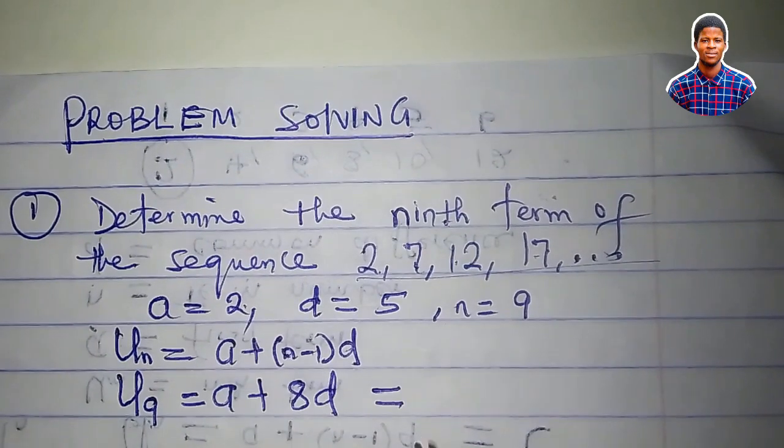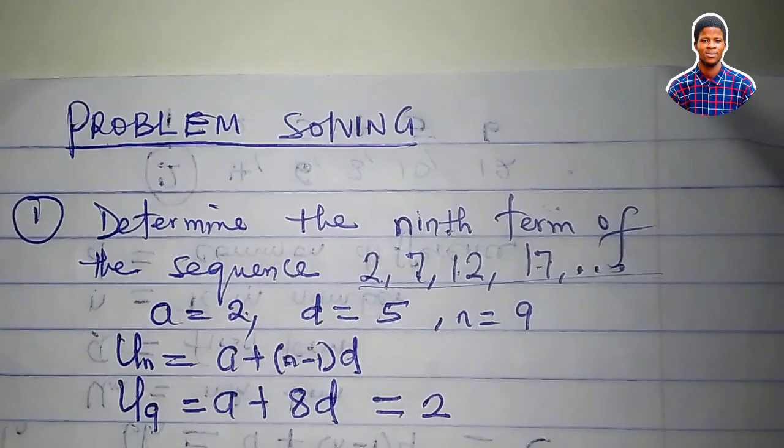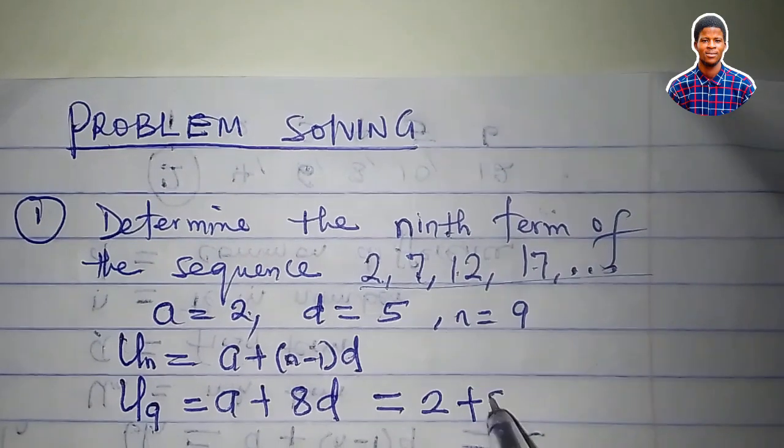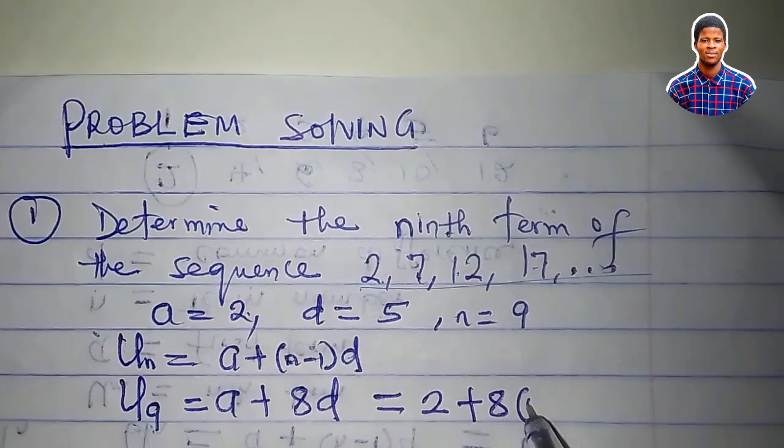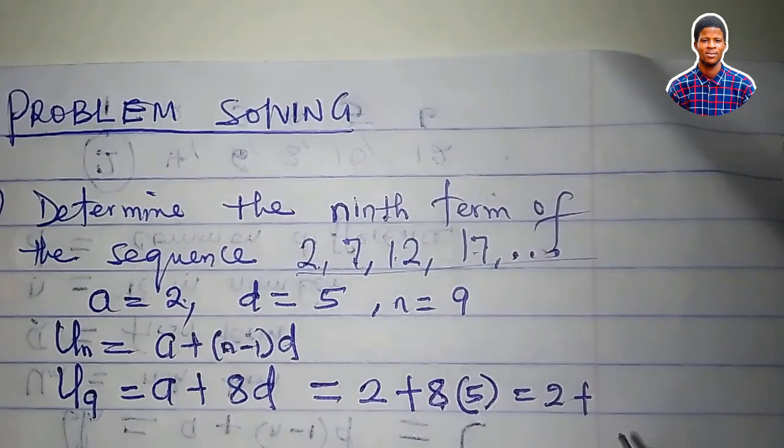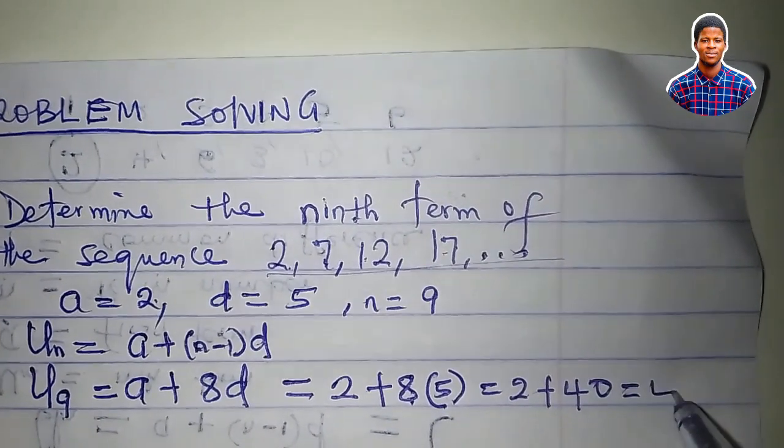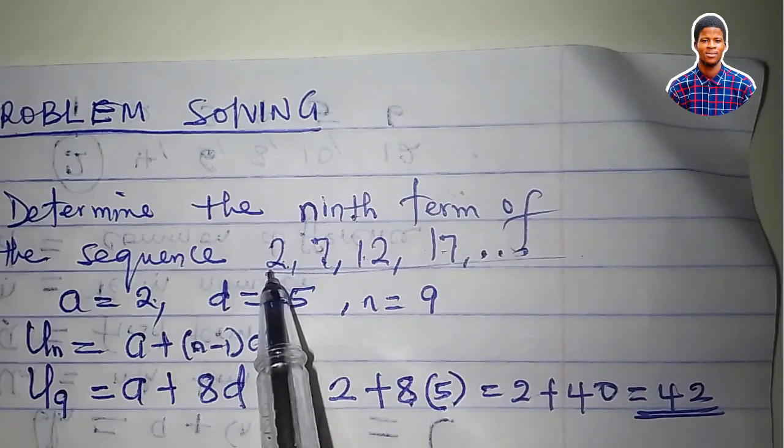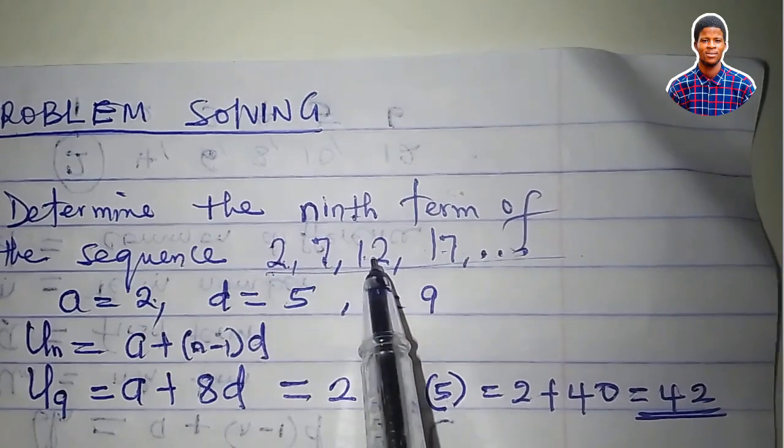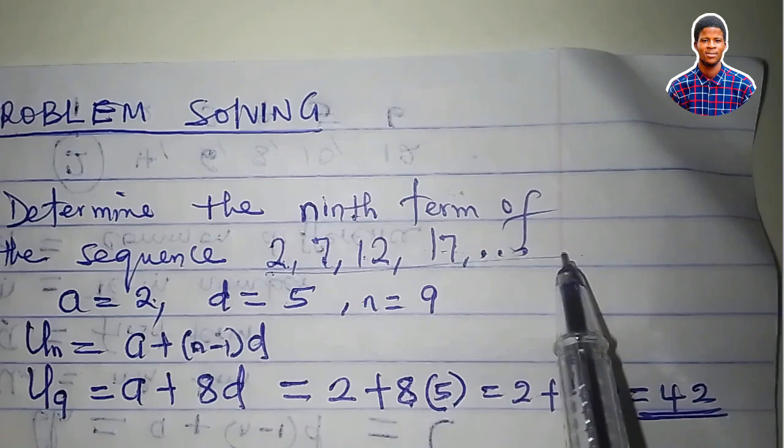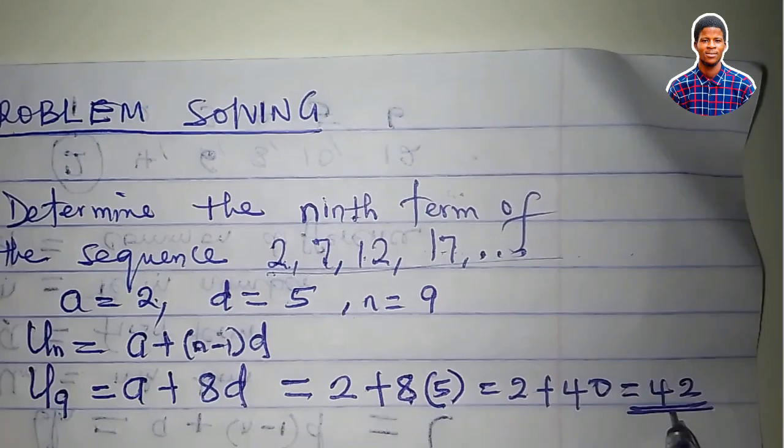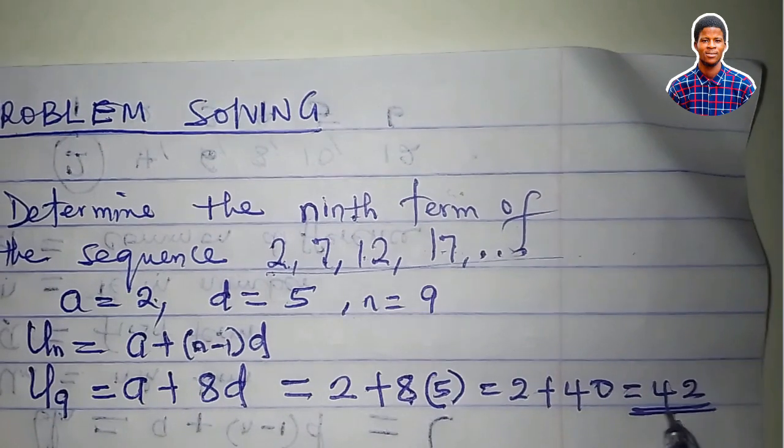What is our a? Two plus eight times what is d? Five. Eight times five is forty. So two plus forty equals forty-two. That means that if we go on and on to write out each member of this sequence, number nine will be forty-two.